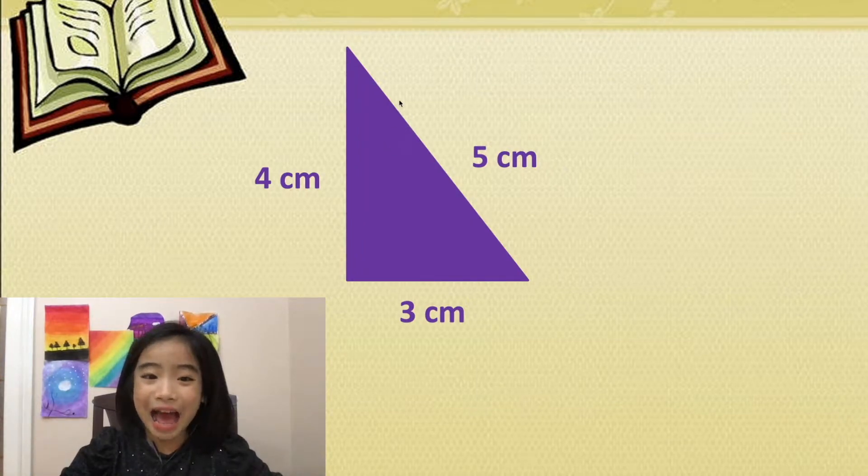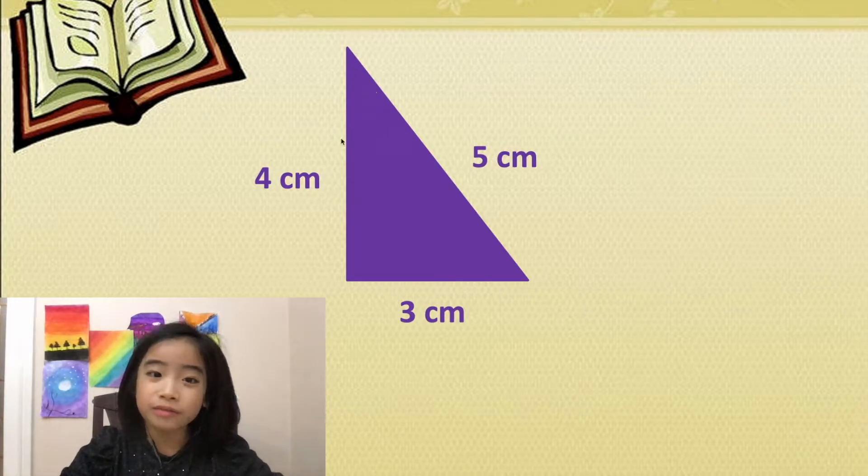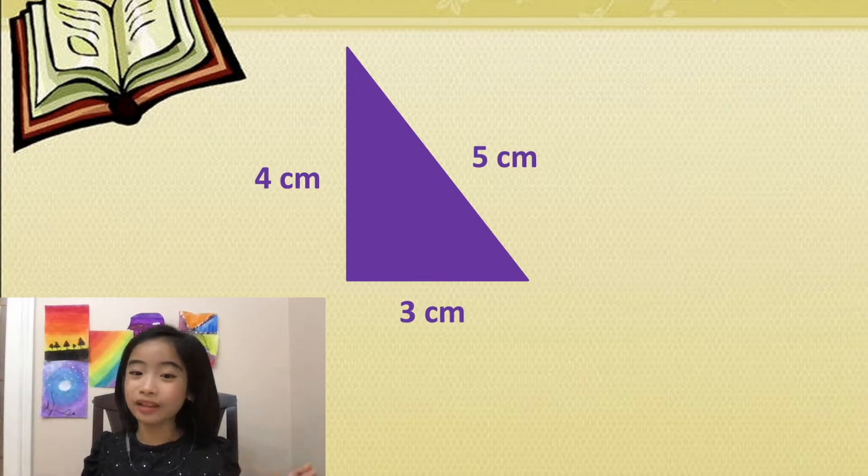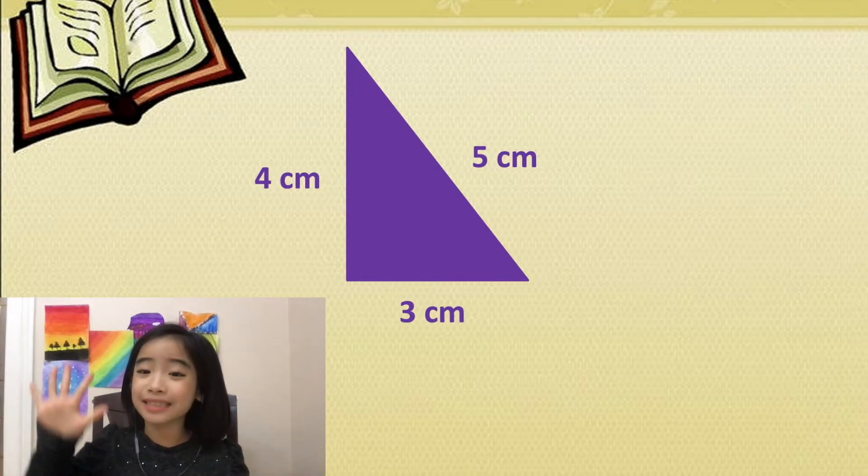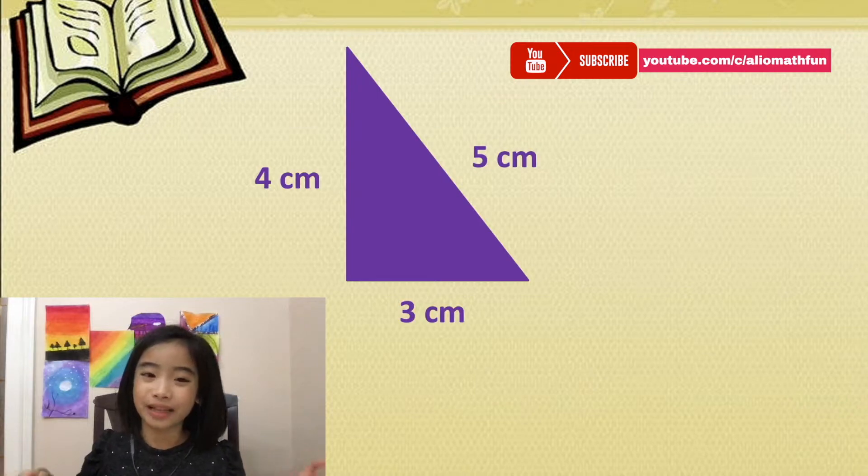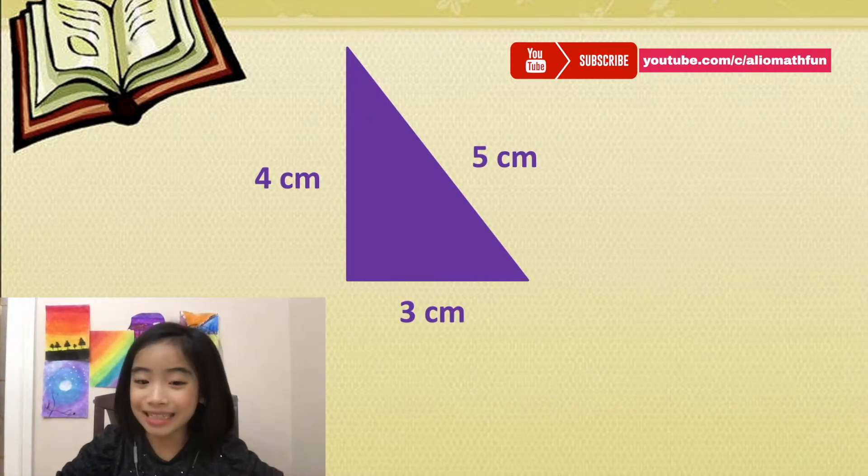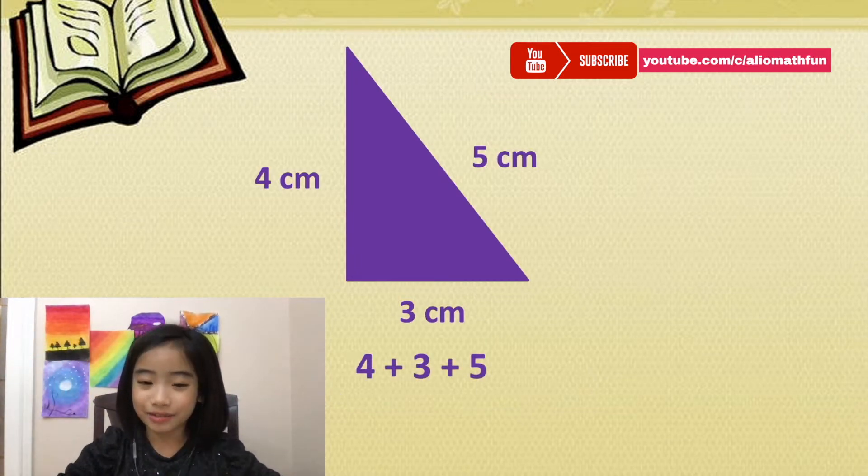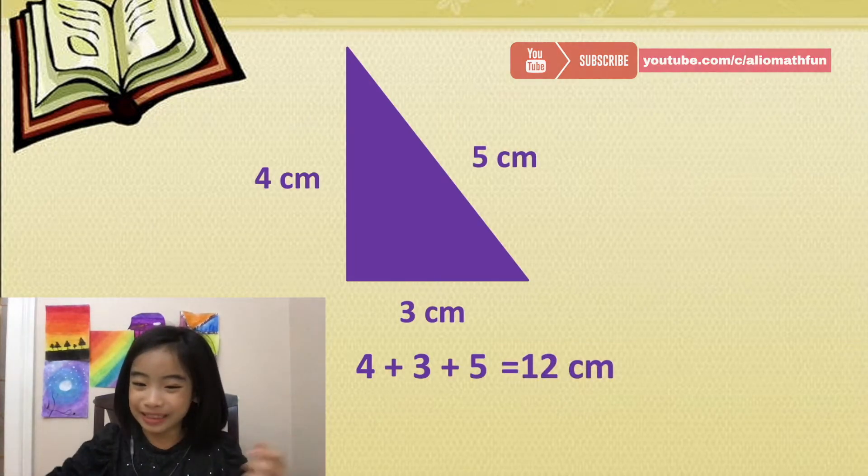First, I have a purple triangle. One side is four centimeters, another is three centimeters, and the last side is five centimeters. The length of the sides added together is the perimeter of the purple triangle. Now let's add: four plus three plus five equals 12 centimeters.